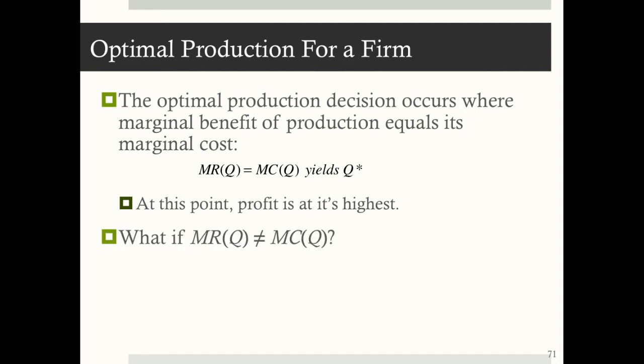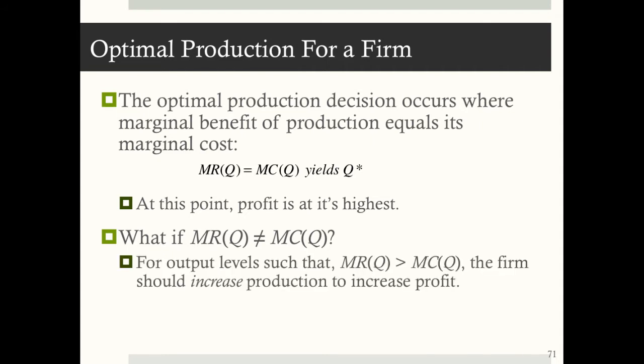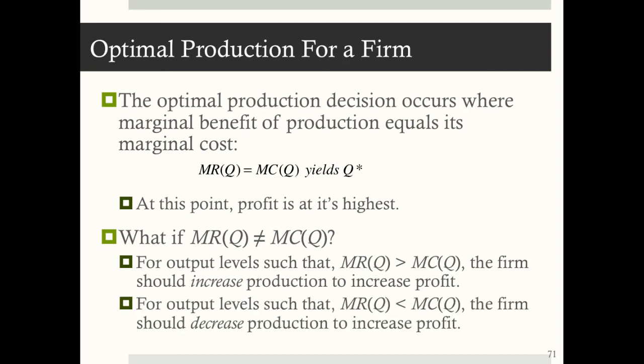What if marginal revenue doesn't equal marginal cost? For output levels where marginal revenue is greater than marginal cost, the firm should increase production to increase profit — because the additional revenue received is greater than the cost incurred. For output levels where marginal revenue is less than marginal cost, the firm should decrease production to increase profit.